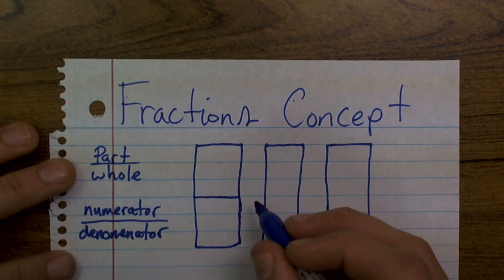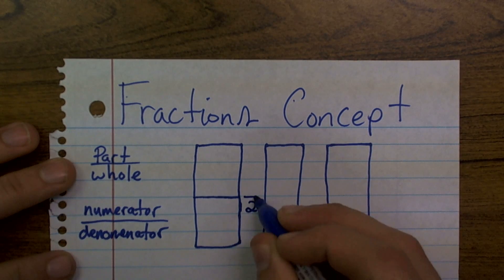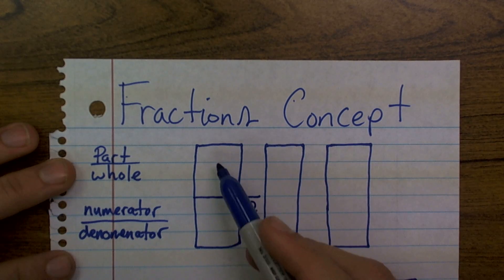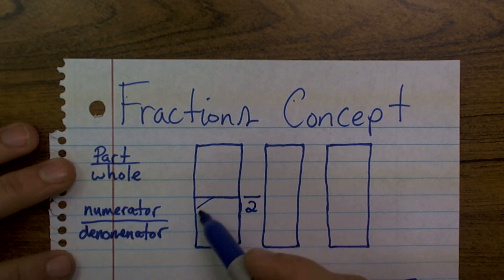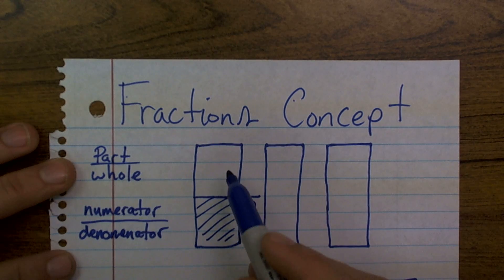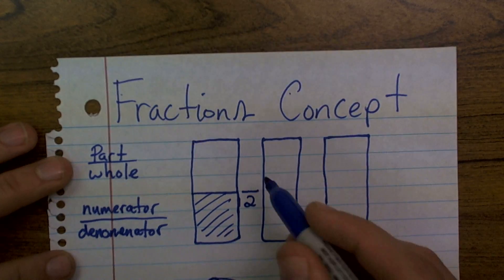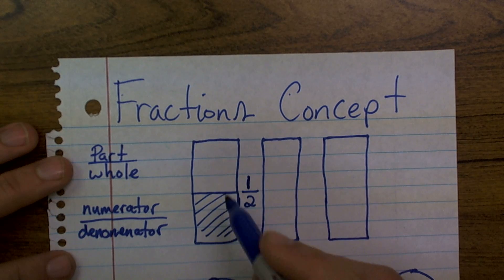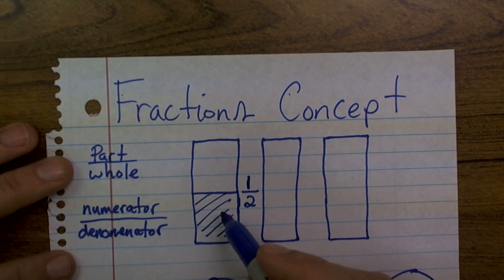So therefore, what I'm going to have is my denominator for this problem is going to be 2. Therefore, I've broken it up into two sections. Now, if I'm going to select one of them, let's say I select this part here, that means I've selected one part out of the whole because there's two parts in the whole. So I've selected one out of a total of two parts. Therefore, that's why this part is one half.